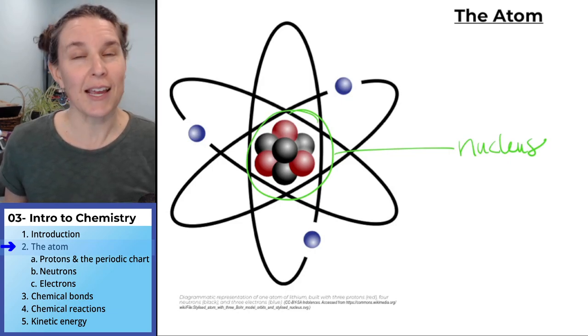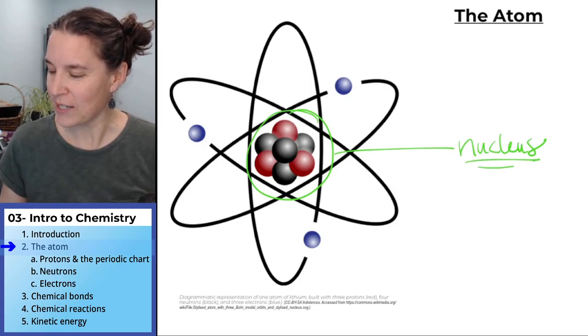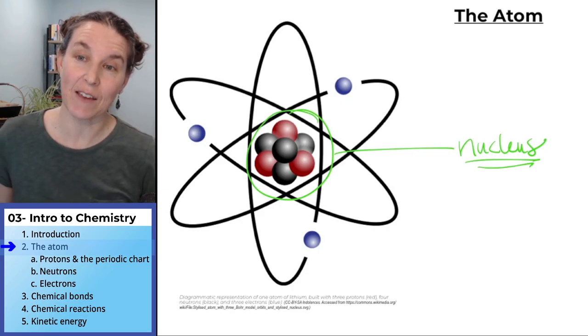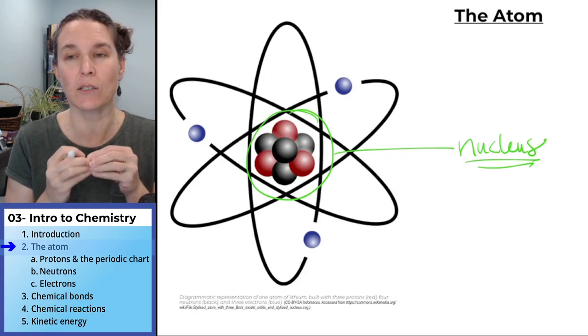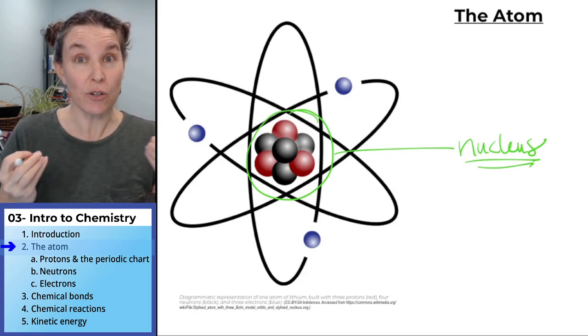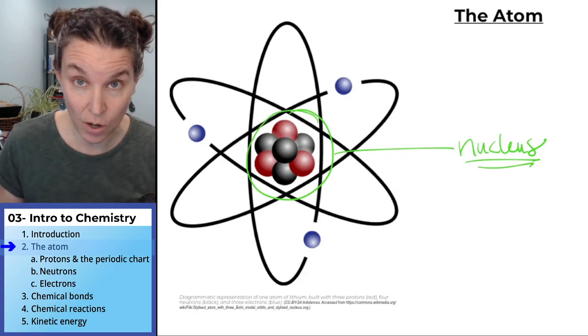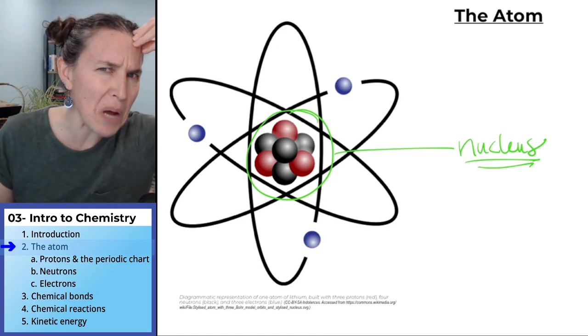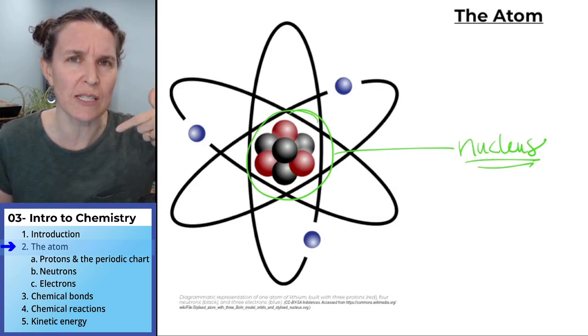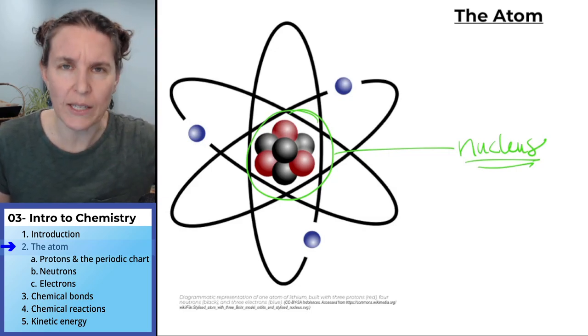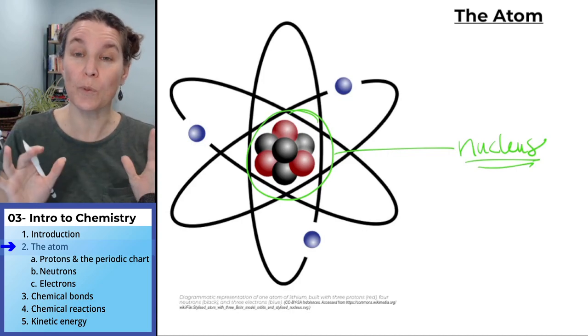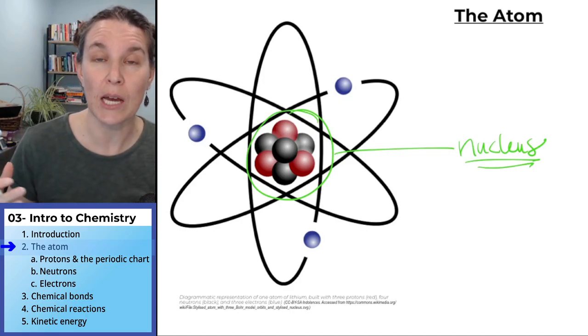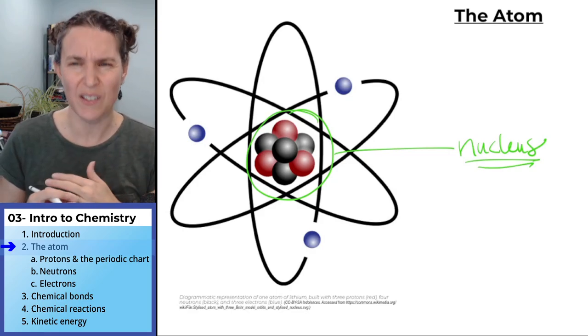I want to say out loud, the word nucleus has many meanings in science. I can think of three. The center of an atom is called a nucleus. The center of a cell is called a nucleus. And a group of cell bodies, neuron cell bodies in the central nervous system is called a nucleus. Super important to be aware that we are going to encounter multiple uses of this word.